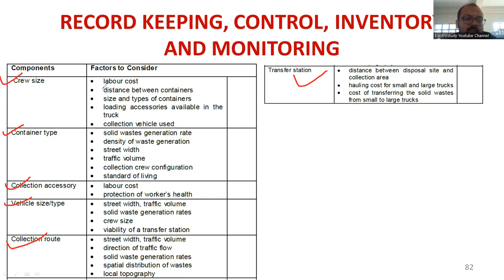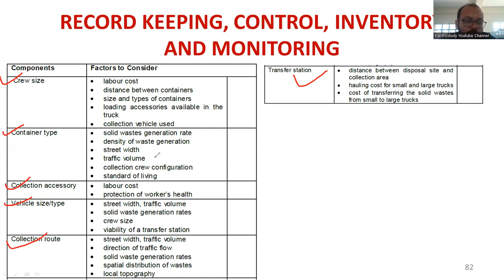Regarding crew size, we track labor cost per person, how much is spent, the distance between containers, size and type of containers, and what type of collection vehicles are used. A typical team includes a driver, two to three workers, and a cleaner, collecting waste and moving to the transfer station. For container type, we consider street traffic volume, solid waste generation rate, density, standard of living, and demographic factors. Collection accessories cover labor cost, worker protection, and health issues.